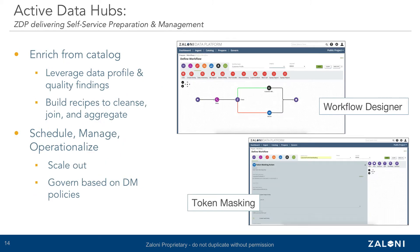Once you have a comprehensive catalog of available data, the next step in any active data hub is to allow subject matter experts like business analysts and data scientists to enrich and prepare this data for analytical and operational use. Being able to prepare and enrich data directly from the catalog is a really valuable asset. We've already talked about how data scientists spend an abnormal amount of time trying to identify relevant and useful data sets, so being able to use the catalog to first search, filter, and group data sets based on relevant business, technical, or operational metadata is a tremendous productivity gain.